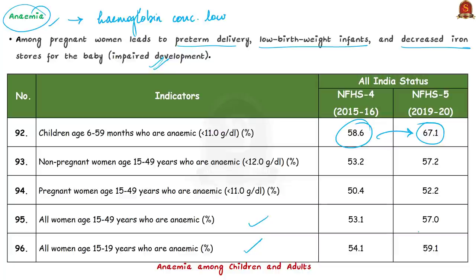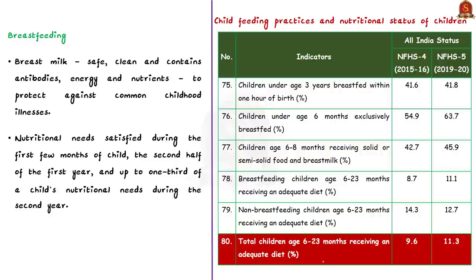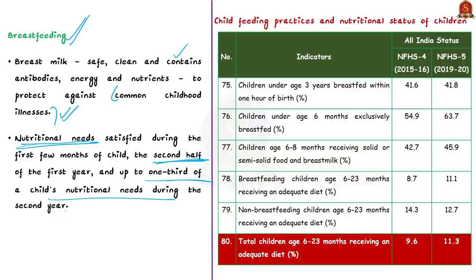The second important component related to malnutrition is breastfeeding. Breast milk is the ideal food for infants — it is safe, clean, and contains antibodies that help the baby protect against many common childhood illnesses. It provides all the energy and nutrients required for infant growth. Importantly, this nutritional need is satisfied not only during the first few months but also during the second half of the first year, and up to one-third of the second year of the child's life.